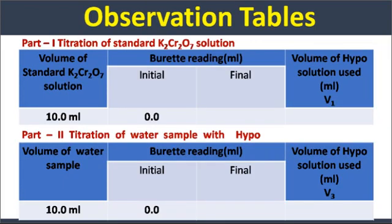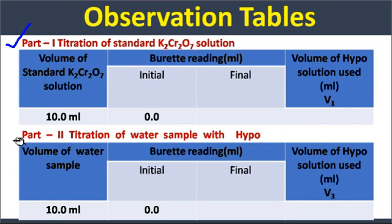We need to build two observation tables: one for the titration of standard potassium dichromate solution with hypo solution, and the second for the titration of water sample with hypo solution.